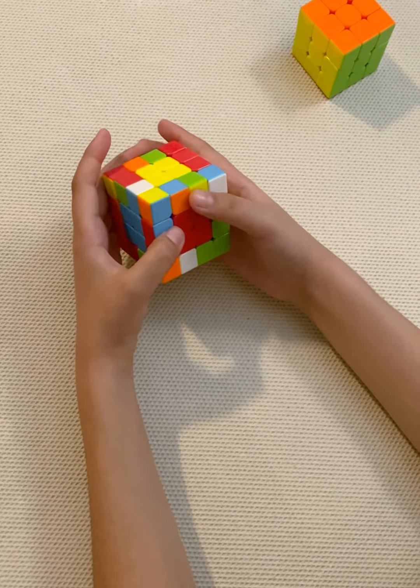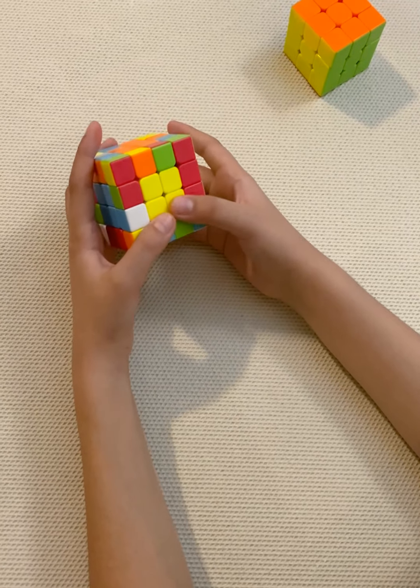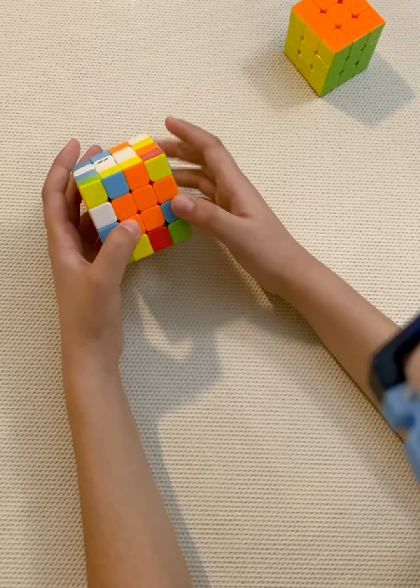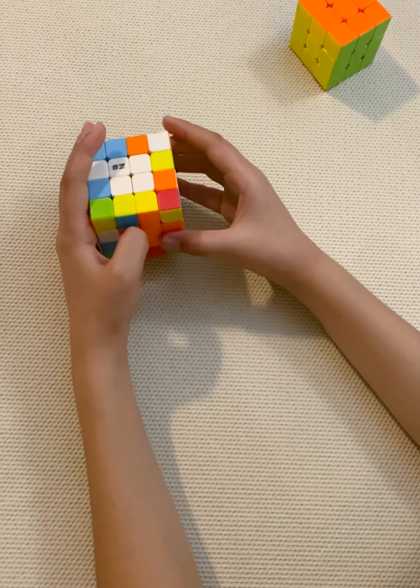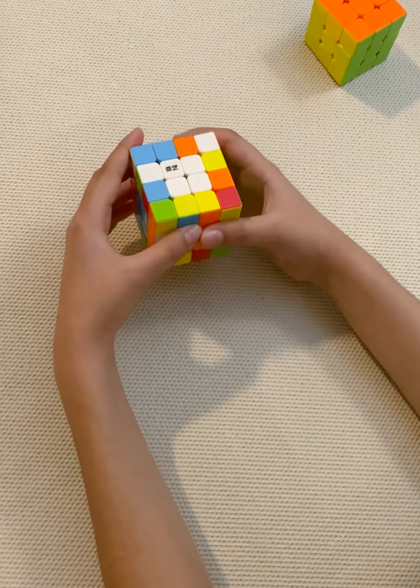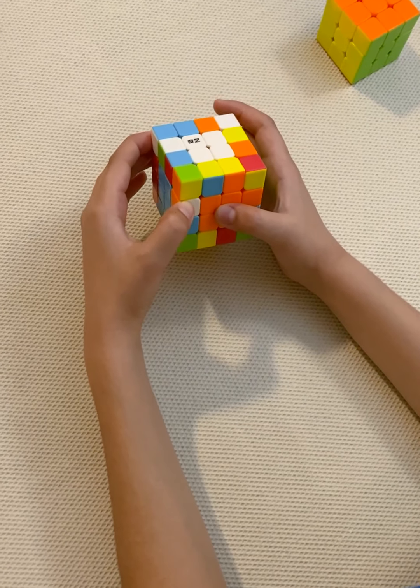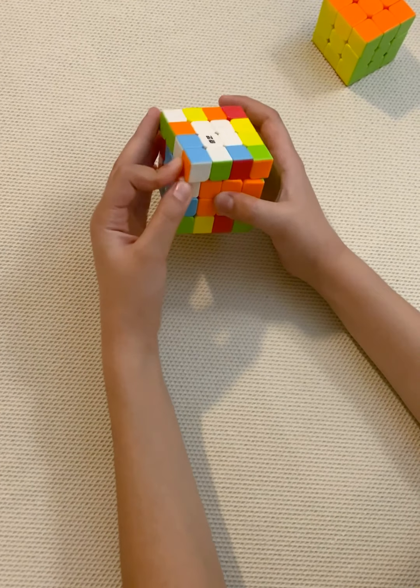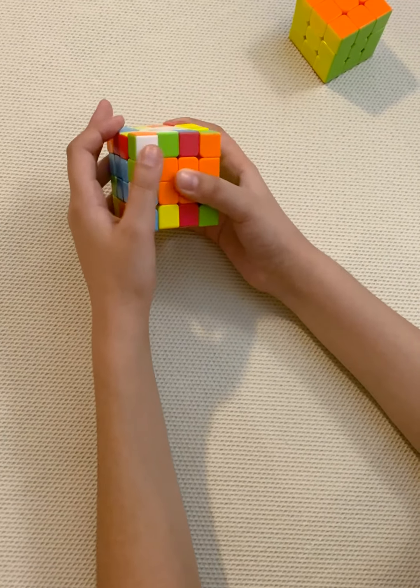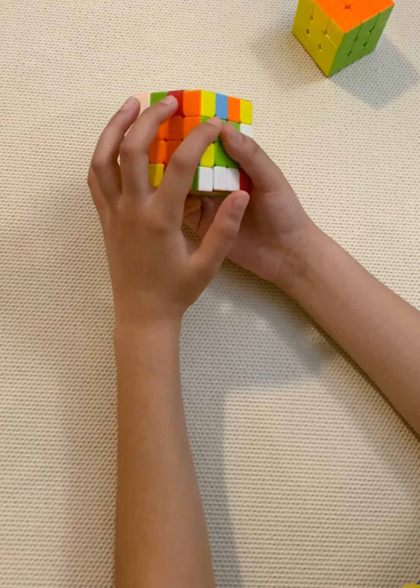The second step you need to do is to find two pieces. I have one orange and green piece, so I'm going to look for another orange and green piece. I found one right here. Make the edge in a position where they're both on the same second-to-the-top row.